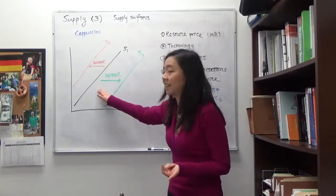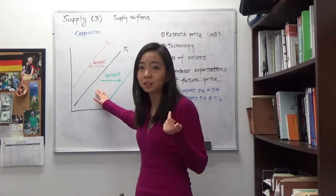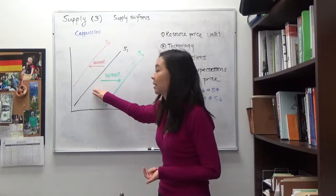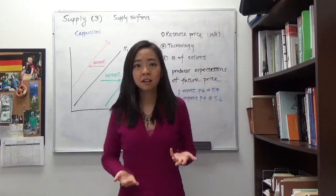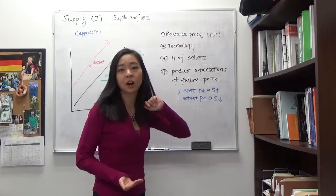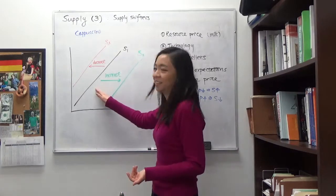Then that will make it less costly to produce cappuccino, shifting our supply curve of cappuccino to the right. So technology will also change our supply, in particular increase our supply.